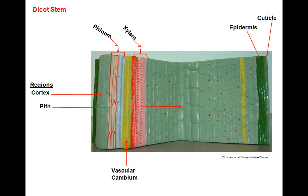This is a view of the same dicot stem but now you are looking at the longitudinal plane of section. See how the phloem and xylem vascular tissues look much like straws running through the stem — areas of conduction.